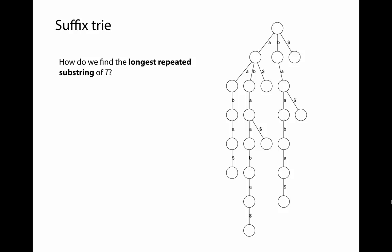To find the longest repeated substring of T — the longest substring that appears at least twice — we look for the deepest node in the suffix trie that has more than one child. In this example, that node corresponds to the substring 'aba', and indeed 'aba' is the longest repeated substring in the string 'ababab'.